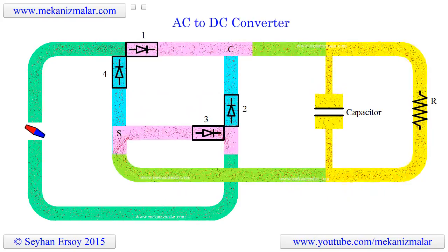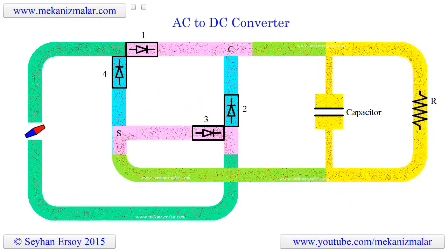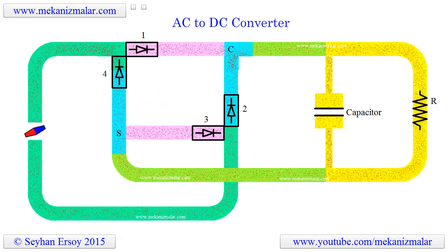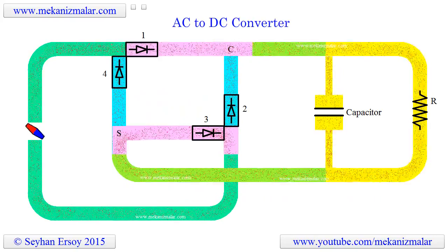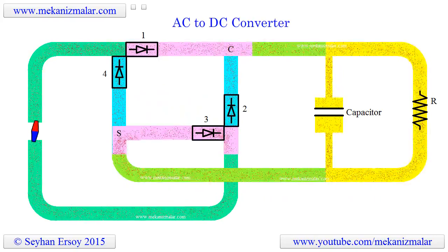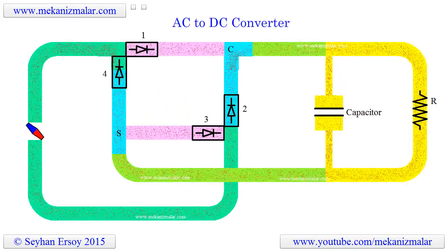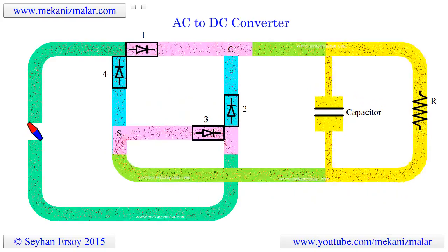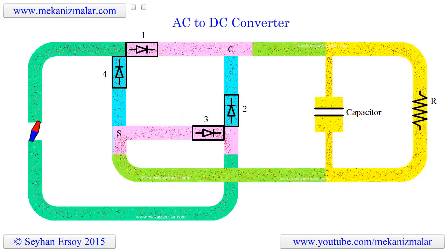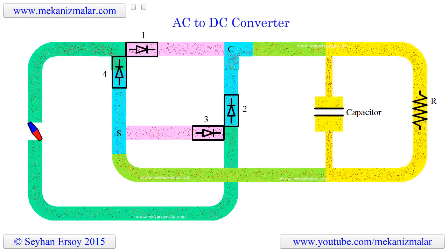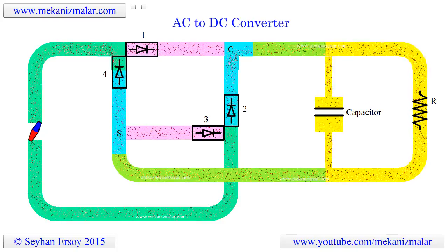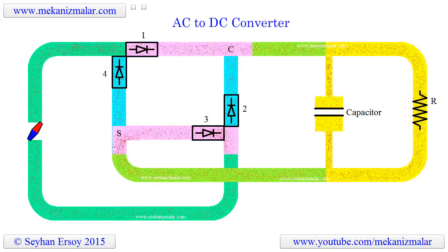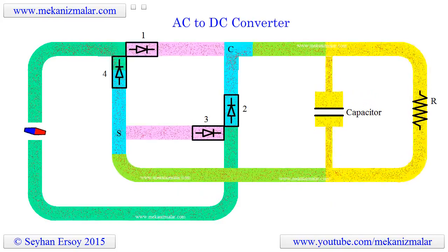Since our main electric source is AC and some of our devices require DC, we need a device to convert AC to DC. For example, we all know the small black box we connect our laptop to the electric supply to charge it. That black box is actually an AC to DC converter and the subject of this animation.